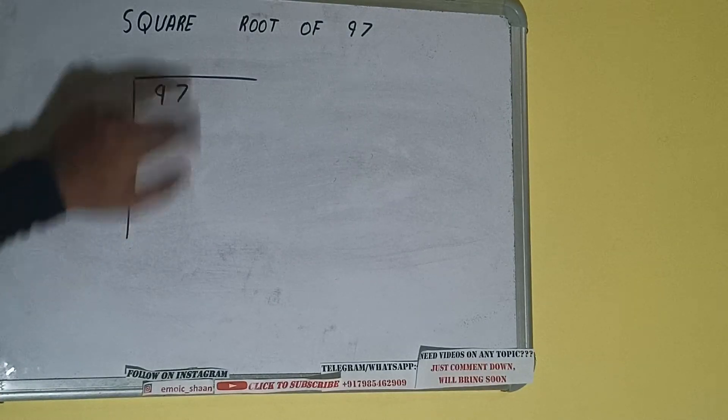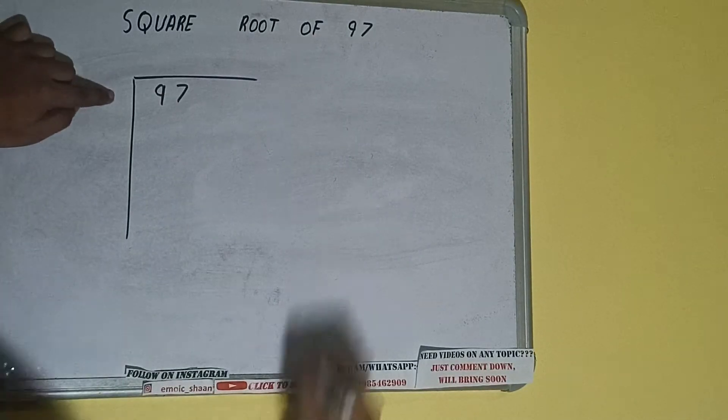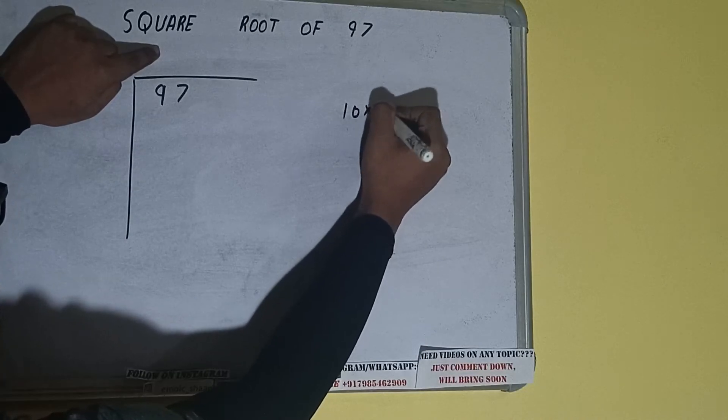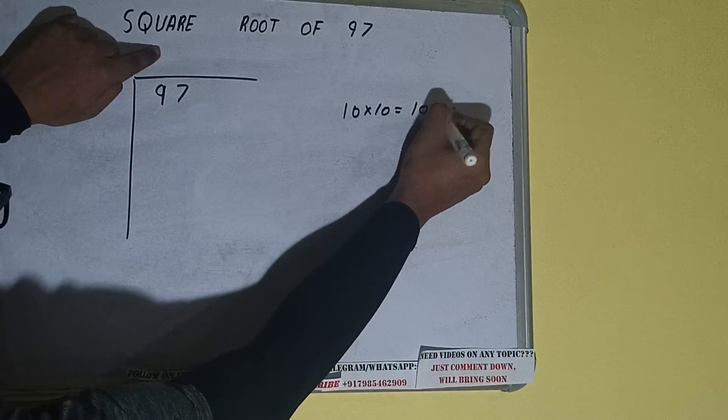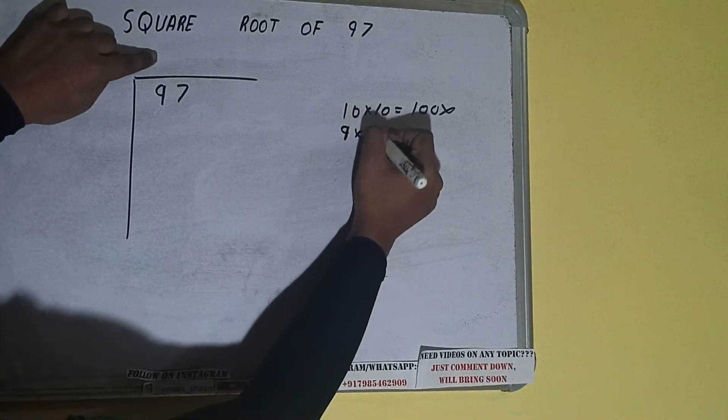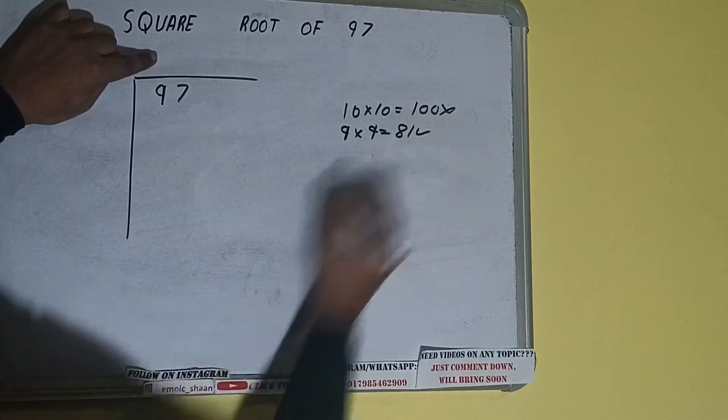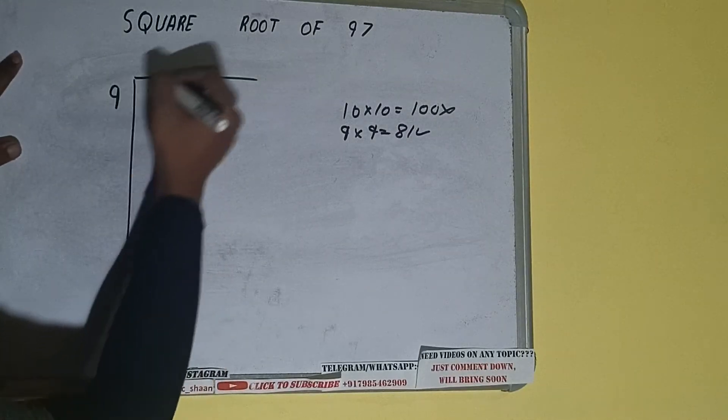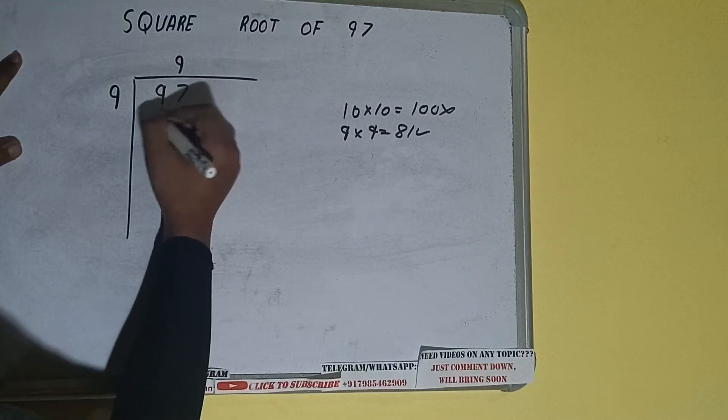...is whatever number we write here, we have to write here also. So if we write 10 here and 10 here, it will be 100, which is greater than 97, so we cannot take it. If we write 9 here and 9 here, it will be 81, which is good to take. So 9 here and 9 here, 81 subtract, 16 will be left.